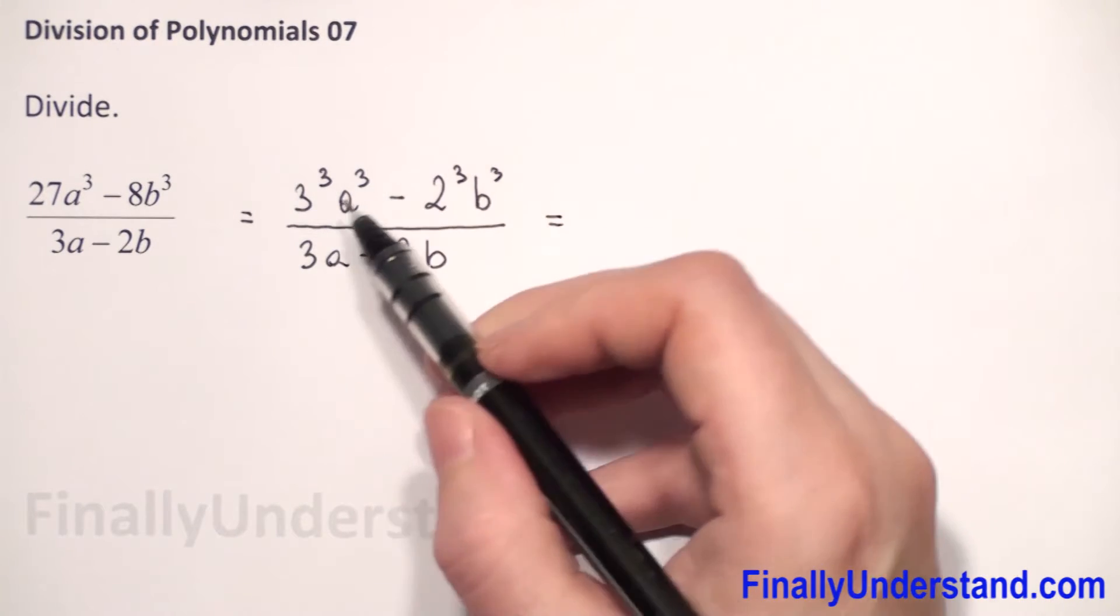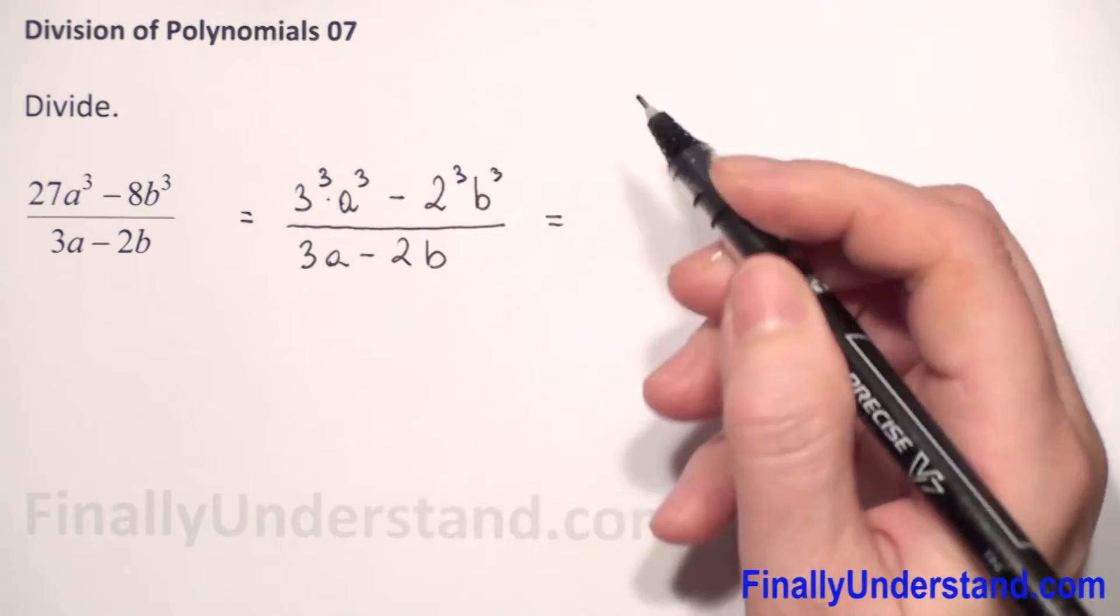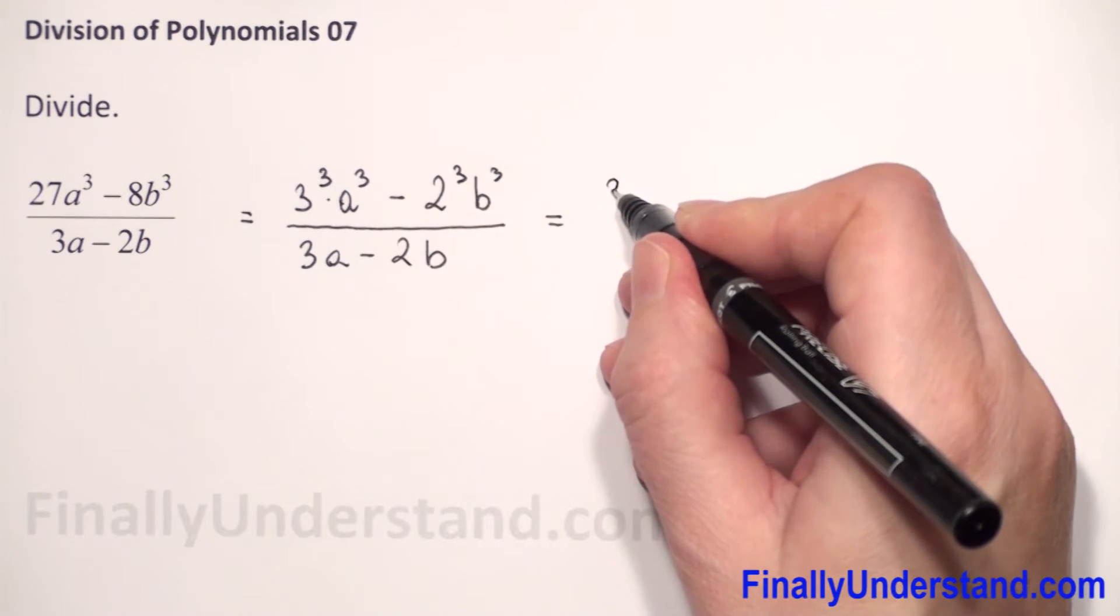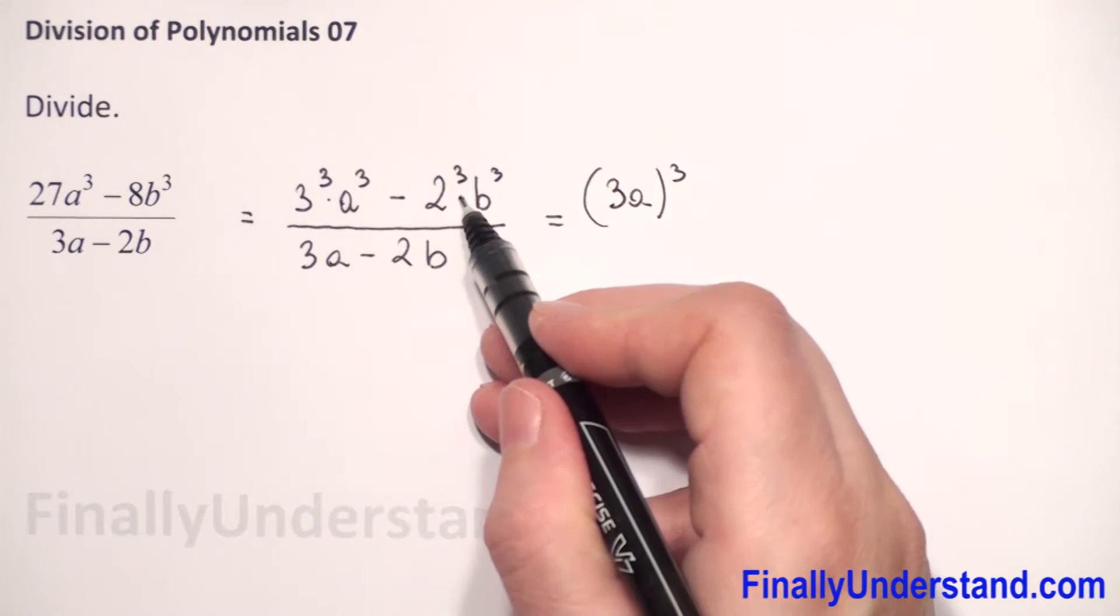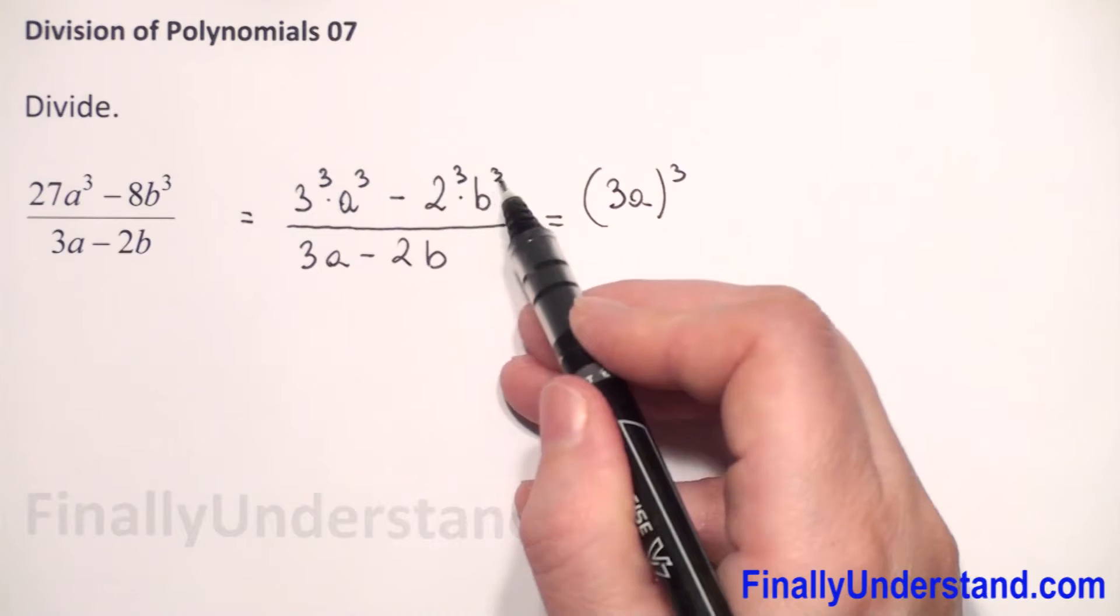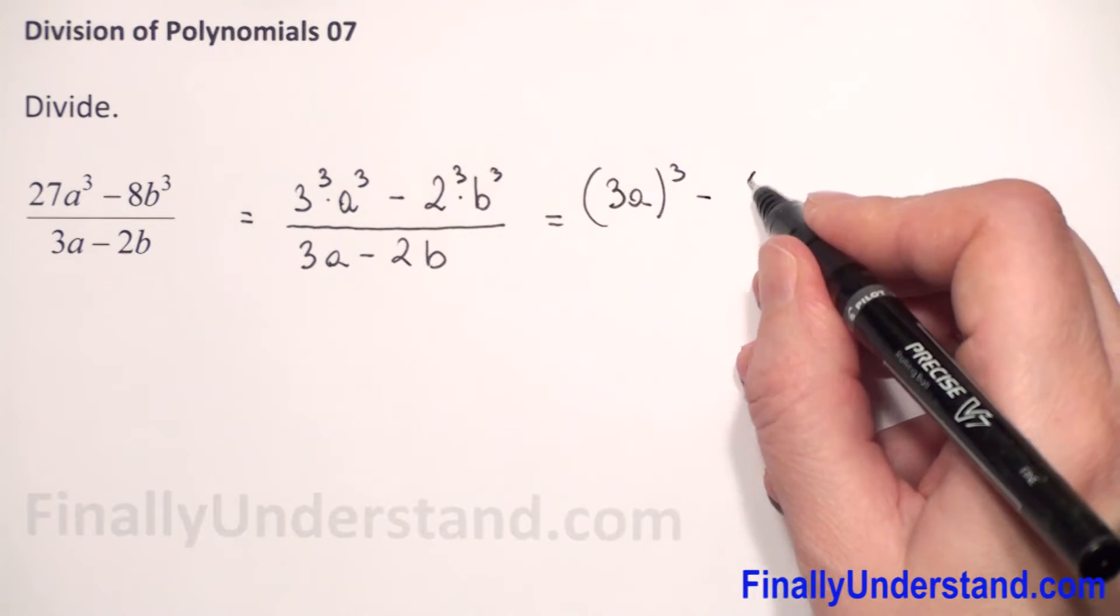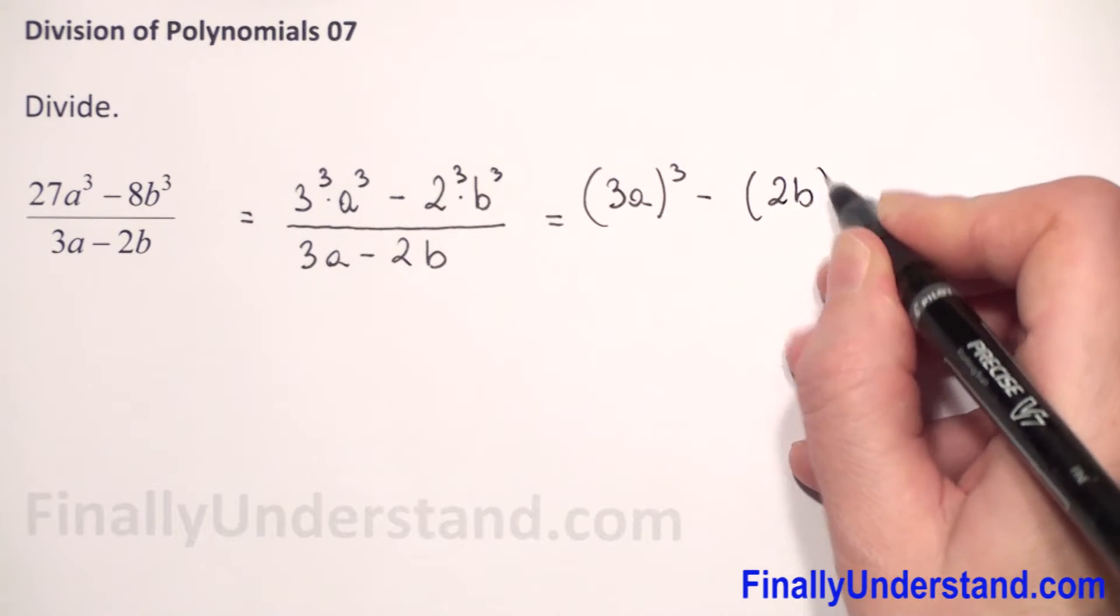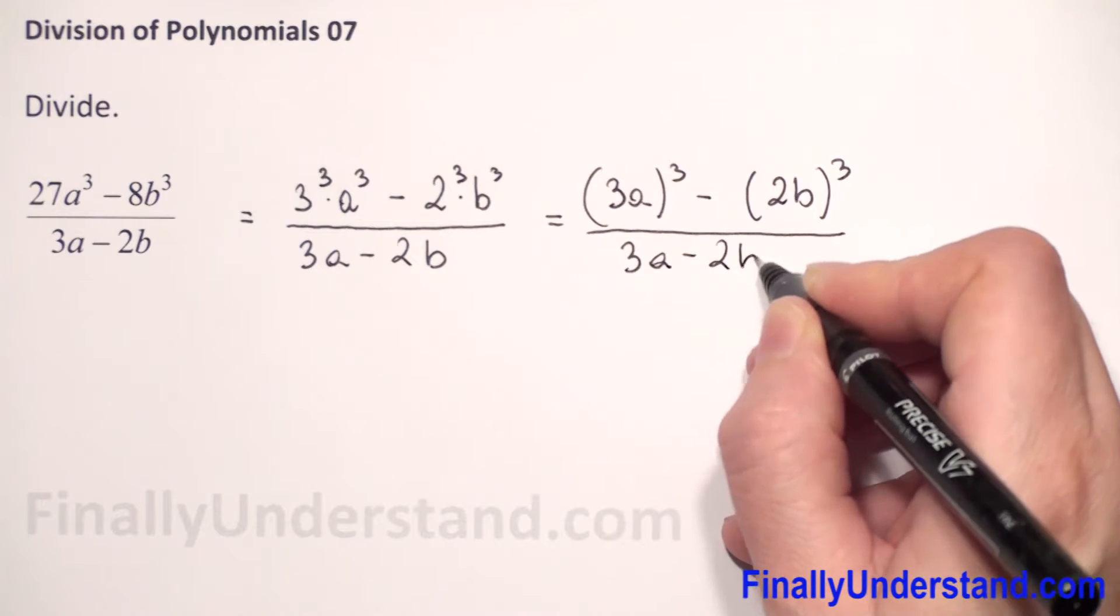This is equal, we have the same exponents and we have multiplication. So I can rewrite that this is 3a to 3rd power and again we have multiplication, the same exponents. So we copy negative sign and we can write that we have 2b to 3rd power over 3a minus 2b.